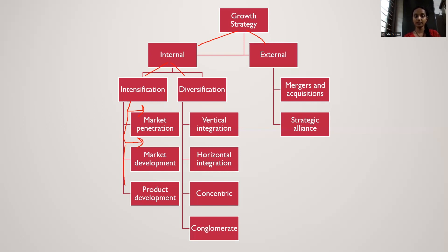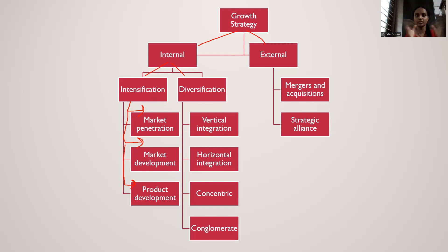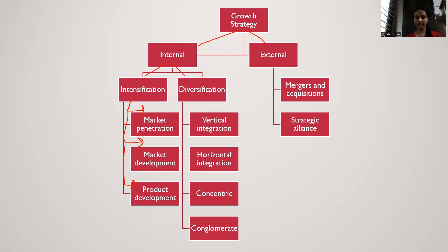The next in growth strategy is product development strategy. Just as we saw in market development the market is new but product is existing — product development is the other way around: the product is new, but the market is existing. For example, the mobile industry is an existing market, but if you come up with something new in mobile technology, that would be product development. The innovative ideas and risk-taking is a major factor because you don't know whether the market will completely accept your product. These were the three types in intensification: market penetration (existing product, existing market), market development (existing product, new market), and product development (existing market, new product).